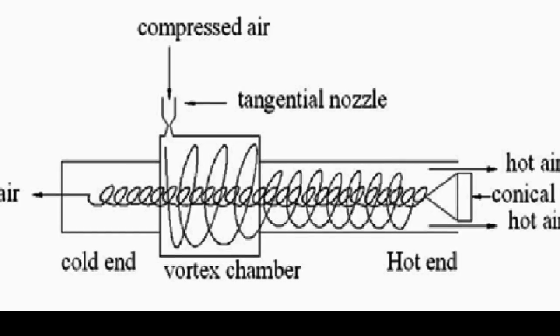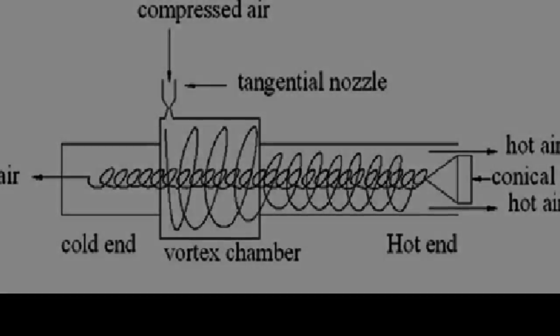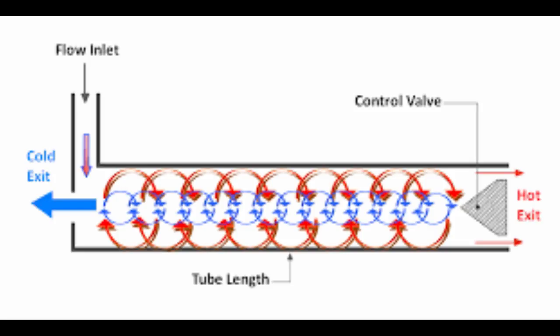Once it spins, the higher energy or the higher temperature particles get pushed to the circumference of the tube just like a centrifuge. The low energy or the low temperature particles occupy the center. The hot stream is bled out at one end while the cold stream is reflected back because of the presence of conical nozzle at the hot end. It comes out at the other end and that's how you get two streams of air with a very high temperature differential.